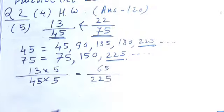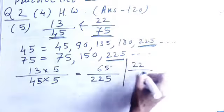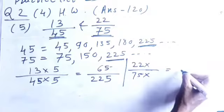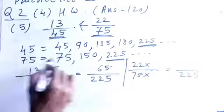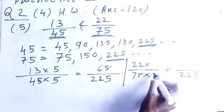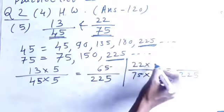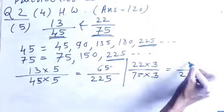Same thing you have to do for the second fraction that is 22 upon 75. Now, here also you have to multiply with the same number so that we get the denominator 225. So, 75, 3s are 225. So, here I need to multiply with 3 to get the 225. So, here also I need to multiply with 3. Because same number we multiply with the numerator and denominator and then 22 threes are 66.